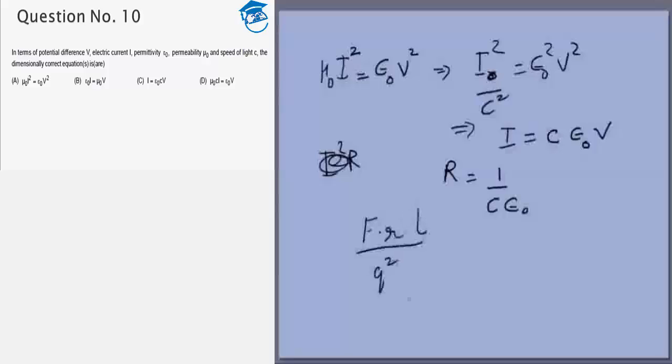I² will be q² by t², right. We want to find if this is equal to 1 by c ε₀. 1 by c will be meters per second, so basically r by t.